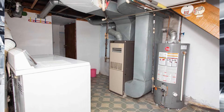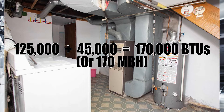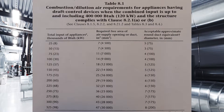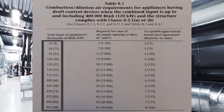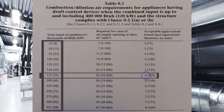For the next example I have two drafthood equipped appliances: a 125,000 BTU furnace and a 45,000 BTU hot water tank. First I add up the BTU loads: 125,000 plus 45,000 equals 170,000 BTUs. Because both appliances are equipped with drafthoods, I go back to table 8-1 and go down to 170,000 BTUs. It's not there, so I go to the next biggest — 175,000 BTUs — go across to the far right, and I need a 6-inch air supply.